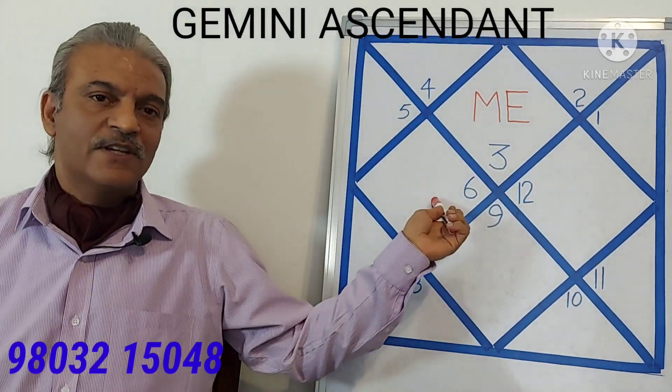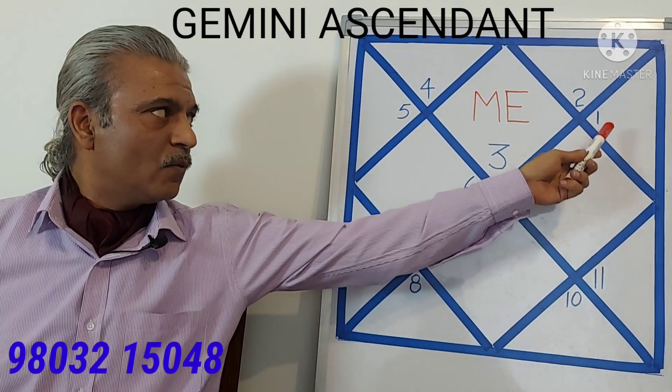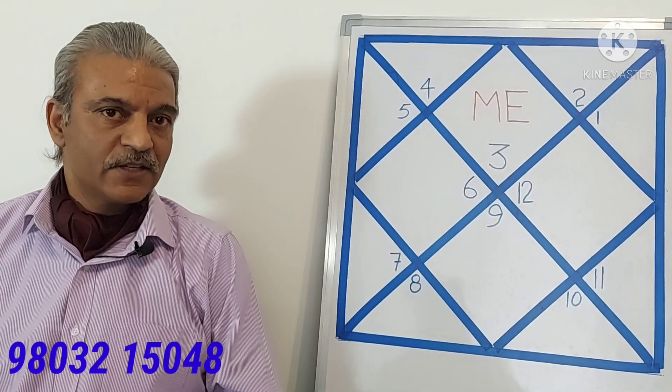4, 5, 6, 7, 8, 9, 10, 11, 12, 1 and 2. This is the sequence in which all the signs are placed in this horoscope.